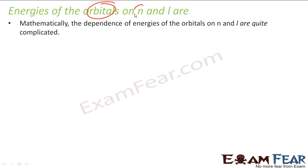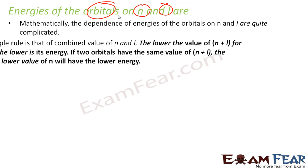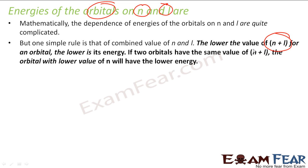We have seen that the energy of orbitals depends on both N and L, which is complicated. To simplify, we use a thumb rule: the lower the value of N plus L, the lower the energy. If two orbitals have the same value of N plus L, the one with the lower value of N has the lower energy. This rule is not 100% correct but works in most cases.